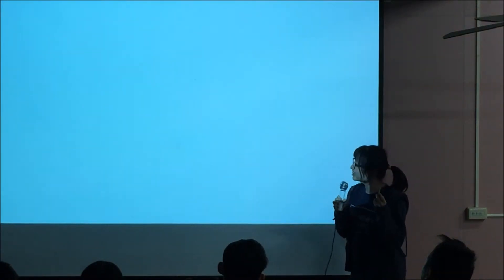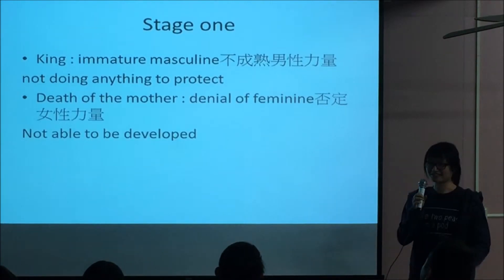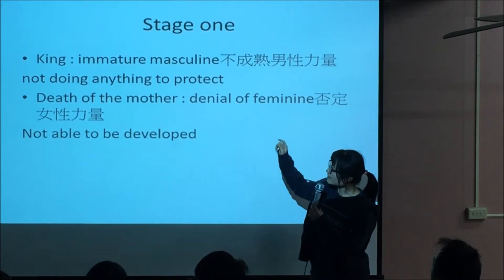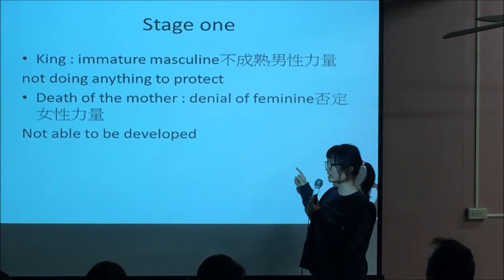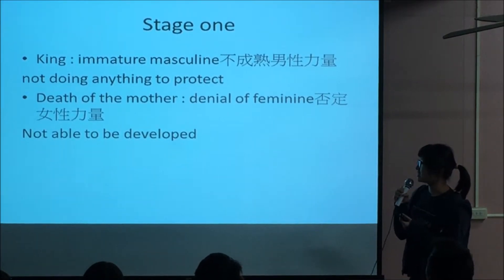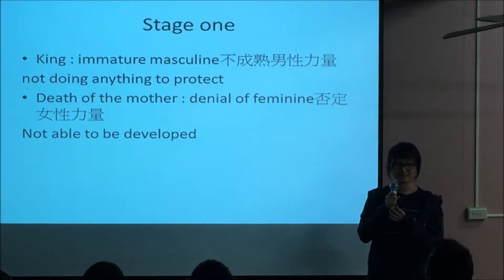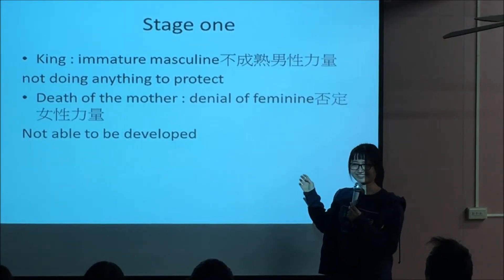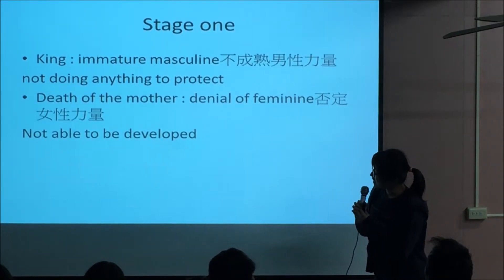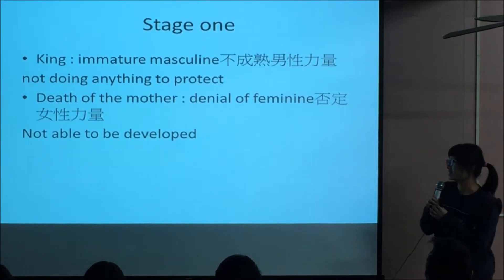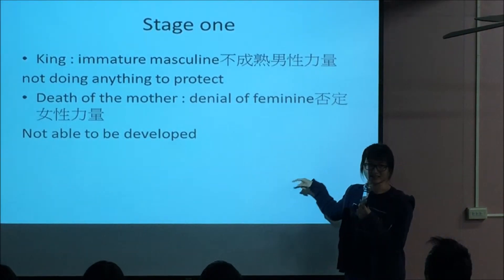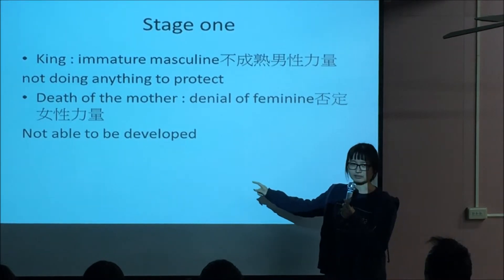So what do these things tell us? The king, who is the father, represents the immature masculine because he does not protect his child. And the death of the mother represents the denial of the feminine — the feminine does not have the chance to develop.